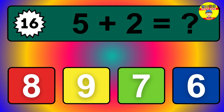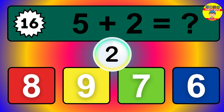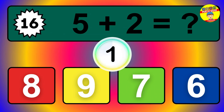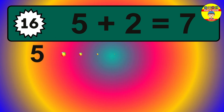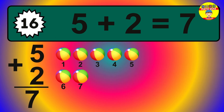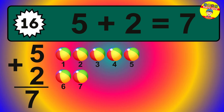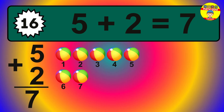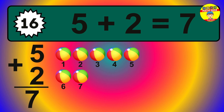Question 16. 5 plus 2 equals what? So the answer is 5 plus 2 is 7. Let's count it: 1, 2, 3, 4, 5, 6, 7.